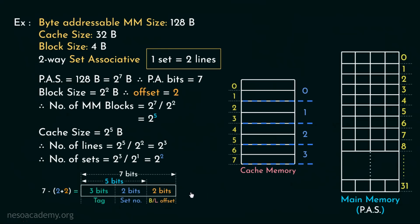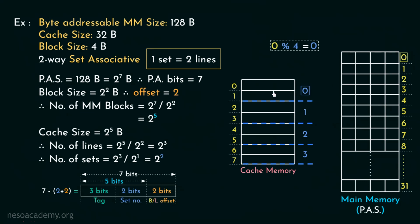So this is the physical address split for this set associative cache. In set associative mapping, the physical address split has the block or line offset portion, the set number field, and the tag field. Now let's observe the mapping procedure. Unlike direct mapping where mapping takes place in terms of cache lines, in set associative mapping the mapping is done with respect to the total number of sets. To find the appropriate set number for a main memory block, we divide the block number by the total number of sets. So main memory block number 0 maps to 0 mod 4, which is set 0, giving it two line options: line number 0 and line number 1.